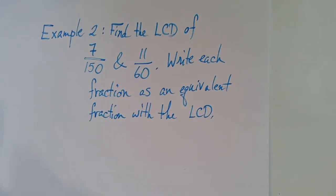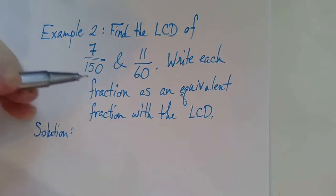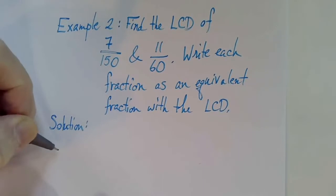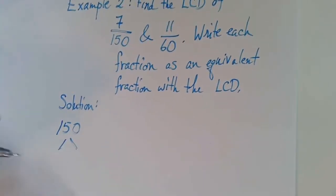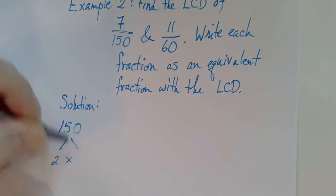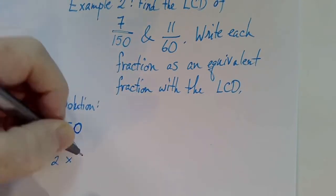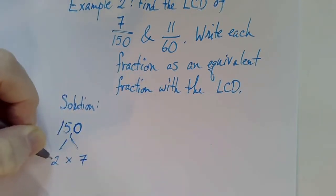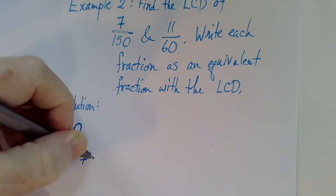So the first thing we want to do is find the prime factorization of both 150 and 60. So let's start with 150. Two definitely goes into 150 because it ends in a zero. Zero is an even digit. Two goes into 15 seven times with the remainder of one. Two goes into 10 five times.